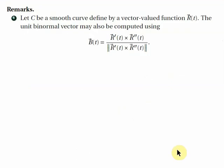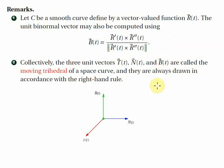Some remarks. First, we can solve for B(t) using r and its derivatives. Let c be a smooth curve defined by r(t). The unit binormal vector may also be computed as B = (r'(t) × r''(t)) / ||r'(t) × r''(t)||. Second, collectively, the three unit vectors T, N, and B are called the moving trihedral of a space curve.